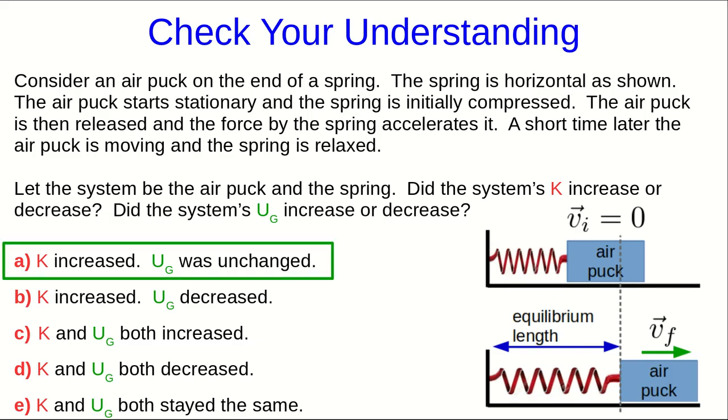Now, you might have been tempted to pick B, because if the kinetic energy increased, and you understand the idea of conservation, you know that that energy must have come from somewhere. And so some other energy must have decreased. And that's true, but it's not the gravitational potential energy that will have decreased. Again, this is a case of spring potential energy, which we saw previously. So the spring potential energy here is what has decreased to allow the kinetic energy to increase.